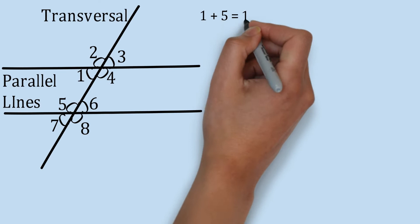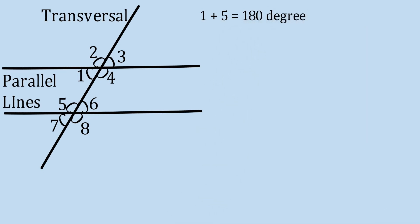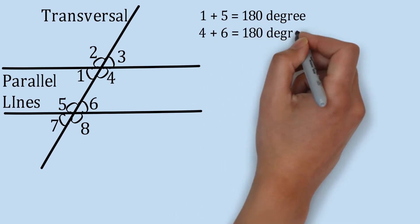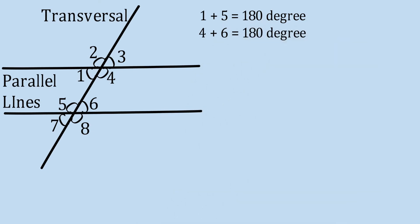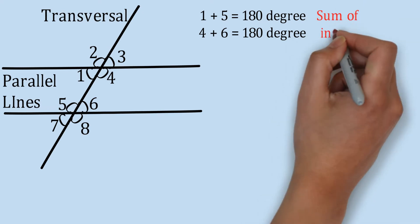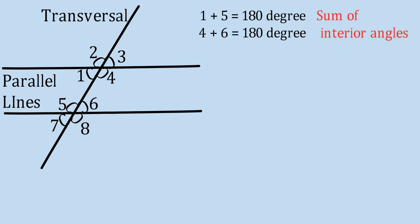Angle 1 plus angle 5 will be equal to 180 degrees. Similarly, angle 4 plus angle 6 will be 180 degrees. Why? Because it is the sum of interior angles that is equal to 180 degrees. You should notice that 1 and 5 are interior to each other, and 4 and 6 are interior to each other.